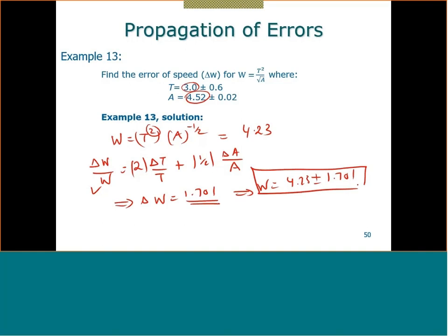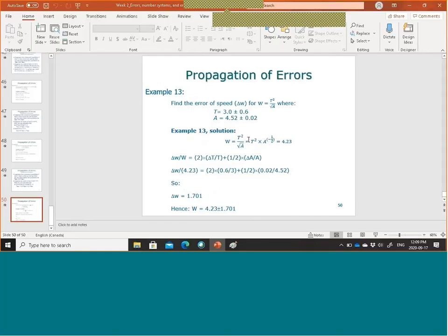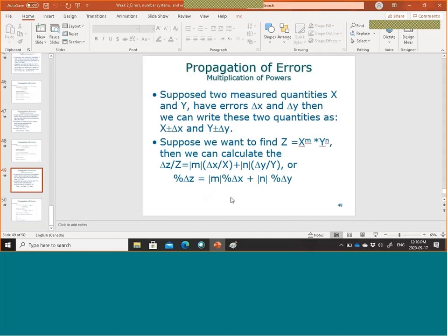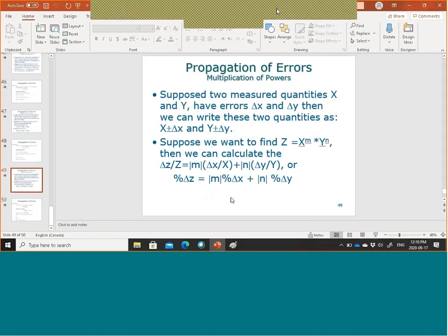Now let's go back to the bonus questions. Why did we leave out the negative sign for the half exponent? As I mentioned, we always take the absolute value of the exponent — you take it for granted. Always the errors add to each other; you never subtract the error.